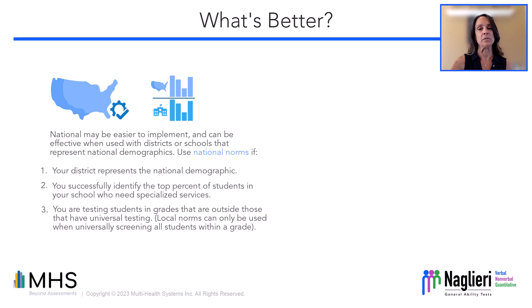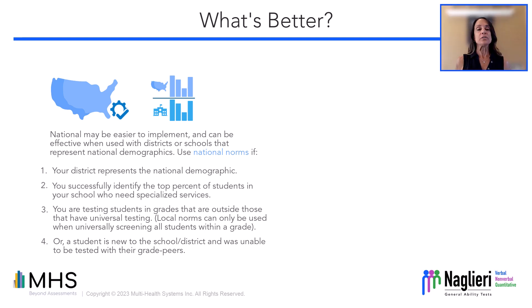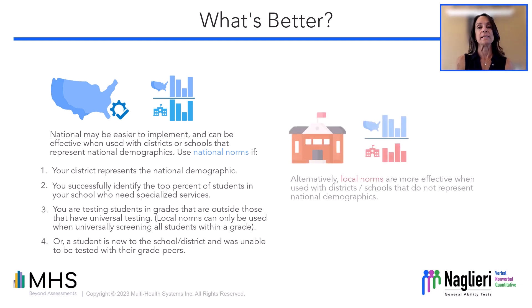Local norms can only be used when universally screening all students within a grade — you can't leave any out. Four, or a student is new to the school or district and was unable to be tested with their grade peers as part of the local norm sample. Research also shows that local norms can be more effective when used with districts or individual schools that do not represent the national demographics.